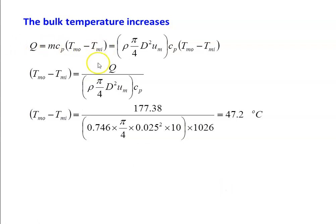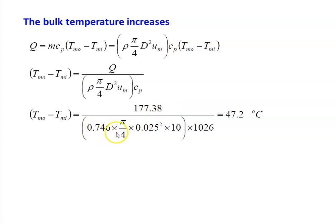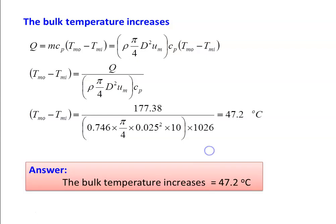Bulk temperature increase: Tmo − Tmi = Q / (m·Cp) = 177.38 / (0.746 × π/4 × 0.025² × 10 × 1026) = 47.2°C. Answer: bulk temperature increase for the fluid is 47.2°C.